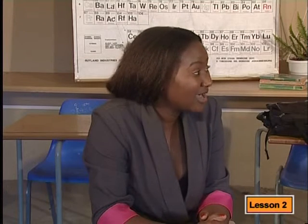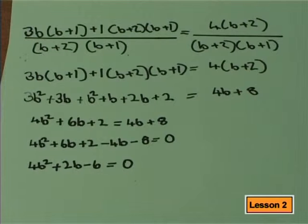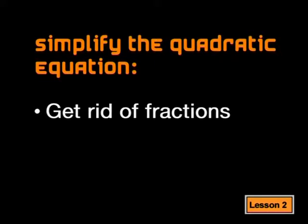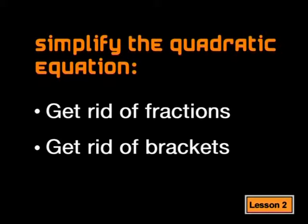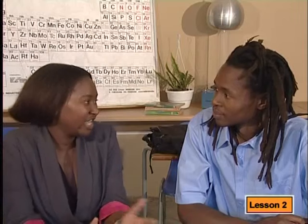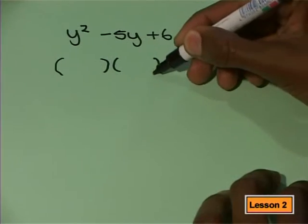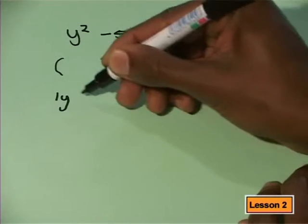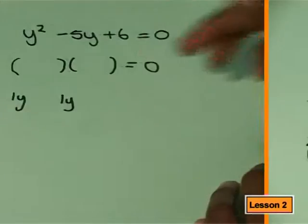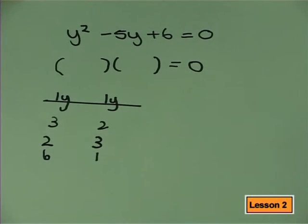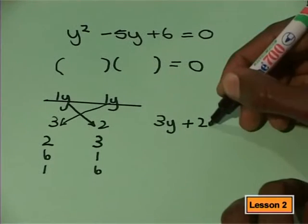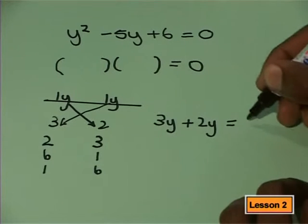That's excellent, Dewhu. Do you think your answer is in its simplest form? Well, I suppose we could take out a common factor of 2 to make the equation simpler. That was very well done. Sometimes an equation might not look like a quadratic at first glance — we need to first simplify it by getting rid of fractions and/or brackets before we can tell whether it's quadratic or not. Now that we have the equation in the right form, we can move on to the next step. I know I need two brackets, so I'll write them down. The factors of the first term are 1y and 1y. The factors of 6 are 3 and 2, or 2 and 3, or 6 and 1, or 1 and 6.